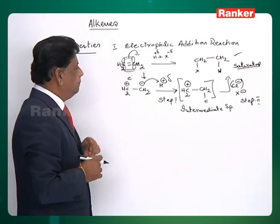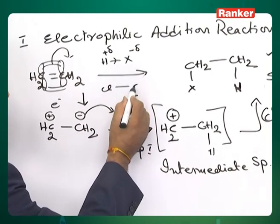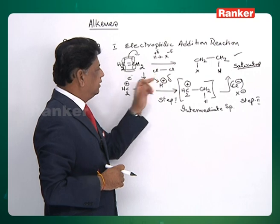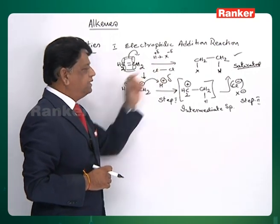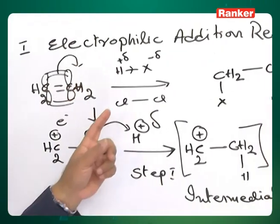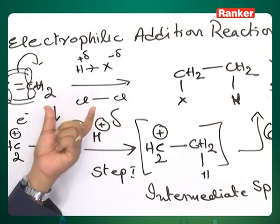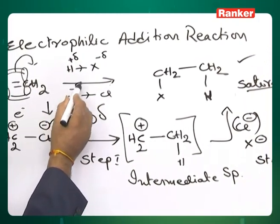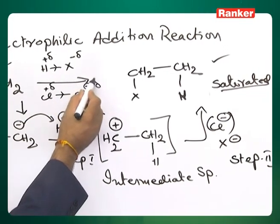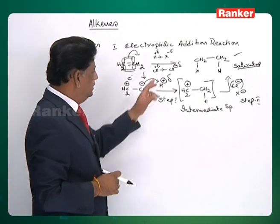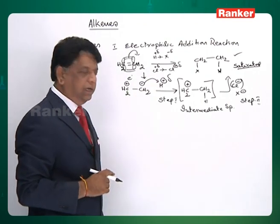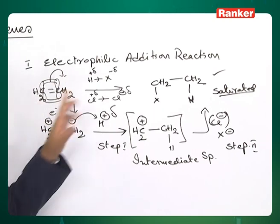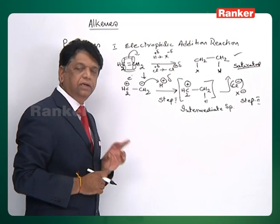Instead of HX, if you take a molecule like chlorine (Cl₂), then each side one chlorine will come. But polarization in the chlorine is not initially present, unlike in HX which is already polarized. As Cl₂ moves towards ethylene, the electron-rich ethylene causes the Cl-Cl bond to polarize — you get delta-plus on one side and delta-minus on the other. Polarization arising in the sigma bond due to the presence of this molecule is called the inductomeric effect (temporary inductive effect). Pi bond polarization in the presence of a reagent is called the electromeric effect or temporary mesomeric effect.